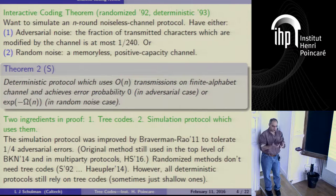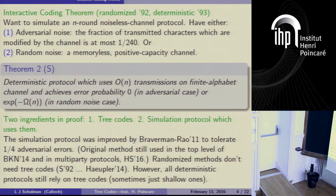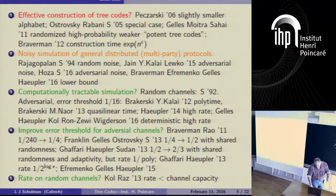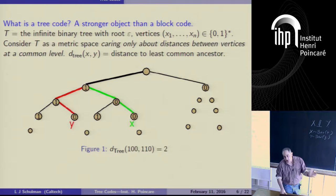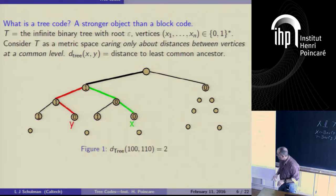It turned out to my surprise, in a wonderful paper by Braverman and Rao in 2011, that tree codes and the simulation protocol separate. You can use a completely different simulation protocol — sort of writing on top of tree codes — which does much better for the error threshold. So let me skip directly now to tree codes, if there are no questions on history or Calvin.